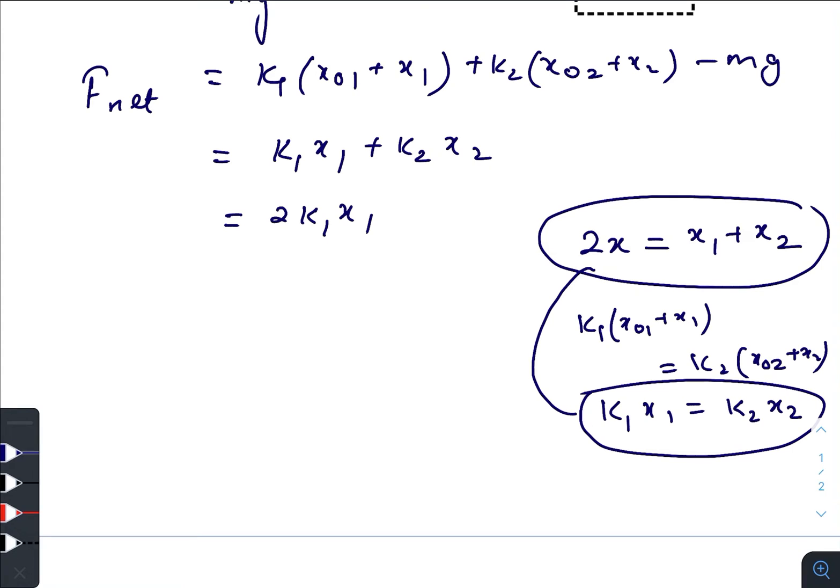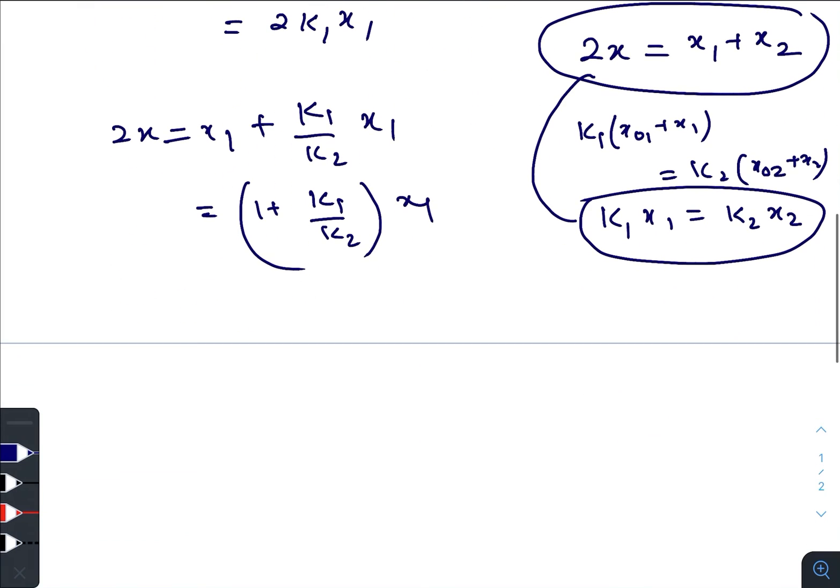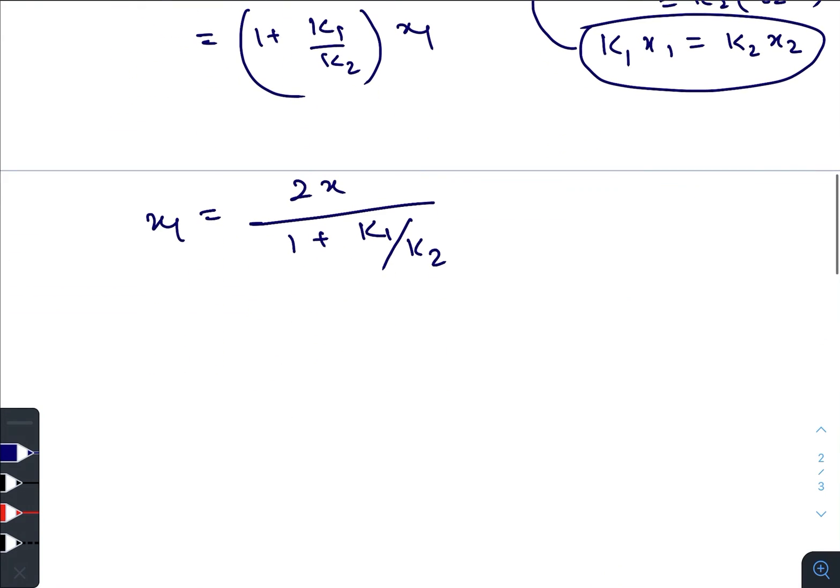We have that x₁ + x₂ equals 2x. Now we will try to write x₁ as a function of x. We have 2x equals x₁ plus (k₁/k₂)x₁ from this equation, so we have (1 + k₁/k₂)x₁. Therefore, x₁ equals 2x divided by (1 + k₁/k₂).